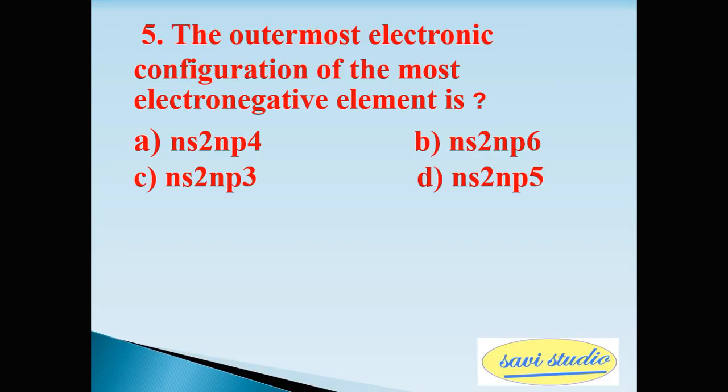Fifth question: the outermost electronic configuration of the most electronegative element is? Four options are A: ns2 np4, B: ns2 np6, C: ns2 np3, D: ns2 np5. The right answer is D: ns2 np5.